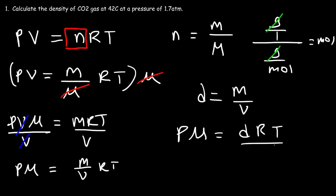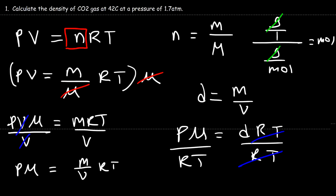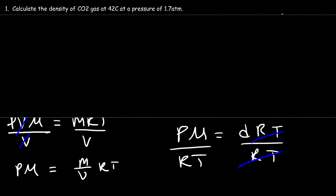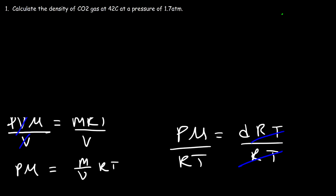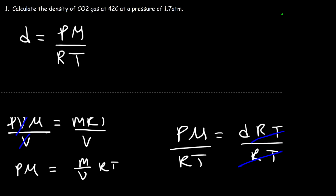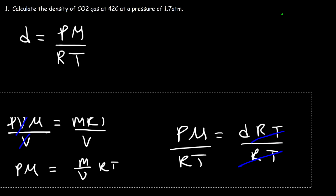So the pressure times the molar mass is equal to the density times R times the temperature. Now to isolate D, let's divide both sides by RT. So the density of the gas is equal to the pressure of the gas times the molar mass of that gas divided by RT. That's the formula you need for this type of problem.